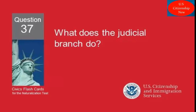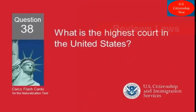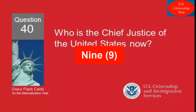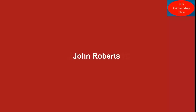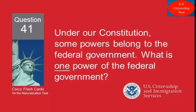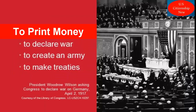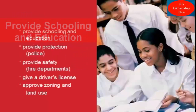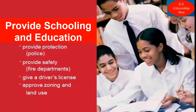What does the Judicial Branch do? Reviews laws. What is the highest court in the United States? The Supreme Court. How many Justices are on the Supreme Court? Who is the Chief Justice of the United States now? Under our Constitution, some powers belong to the federal government. What is one power of the federal government? To print money. Under our Constitution, some powers belong to the states. What is one power of the states? Provide schooling and education.